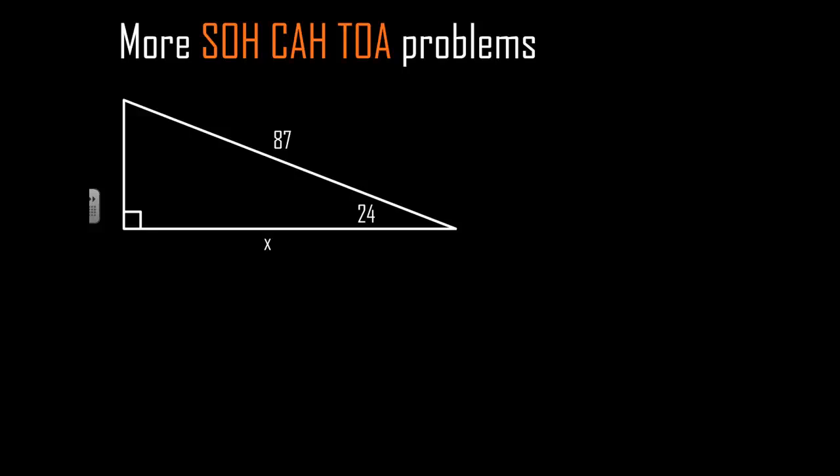Alright, we're going to do some more SOHCAHTOA problems here. In this first example we have a missing side. For a missing side, the first thing to do is check what sides I have. For this problem I have the hypotenuse, which is 87, and the X is your adjacent.